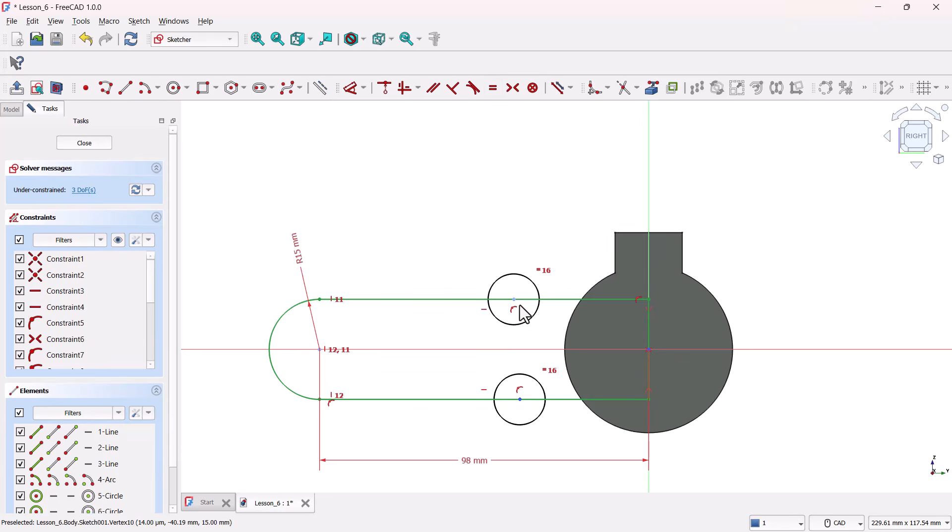Now, hold Ctrl and select these two circle centers and select this axis, and apply the symmetrical constraint to make them symmetrical around axis. We've got some extra lines from the circles. Now, grab the trim edge tool and clean up these circles by trimming edges.